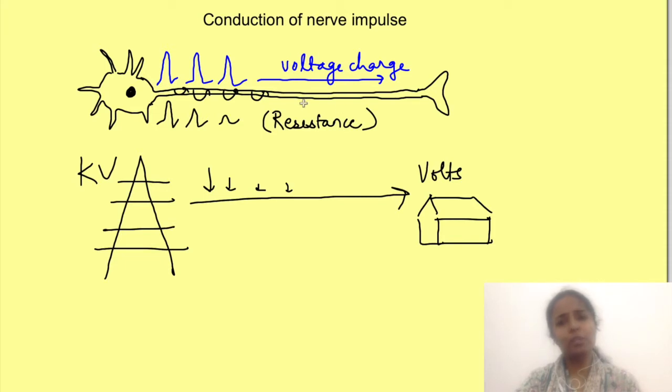So if action potential travels by this method its amplitude will decrease over distance and finally there will be loss of all potential. That means action potential will not reach to the axon terminal. But does that happen? No.